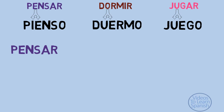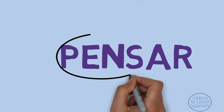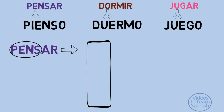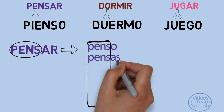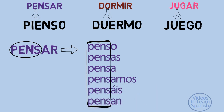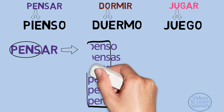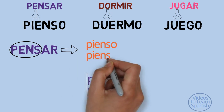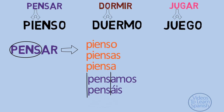Let's see the conjugation of pensar. If we follow the trick we studied for finding the regular verb's stem, we get this conjugation: penso, pensas, pensa, pensamos, pensáis, pensan. However, pensar is an irregular verb, and the last vowel of the stem — in this case, E — is going to change to IE in all forms except nosotros and vosotros.